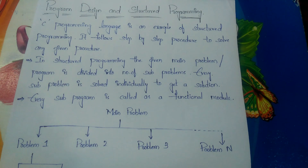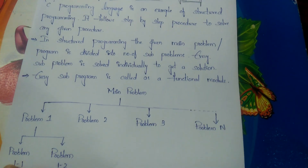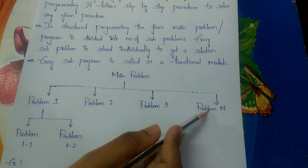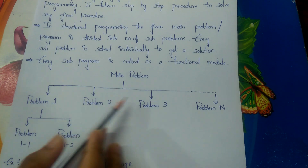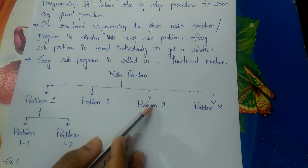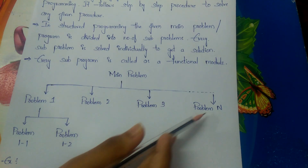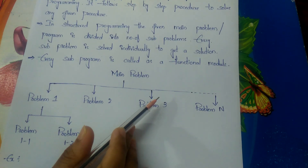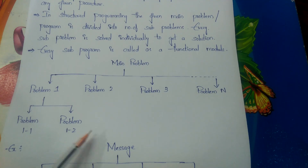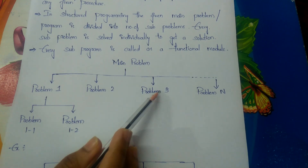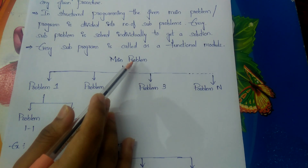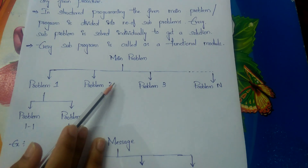Every sub-program is called a functional module. The main problem is subdivided into problems 1, 2, 3, up to problem N. Further, problem 1 is also divided into problems 1.1, 1.2, and so on — these are all called functional modules, and they are solved individually to solve the main problem.